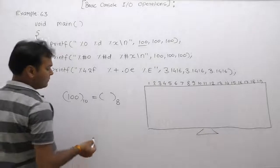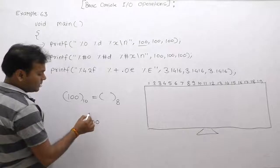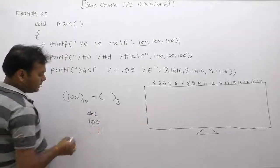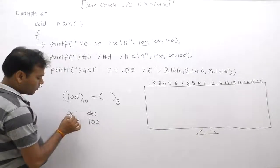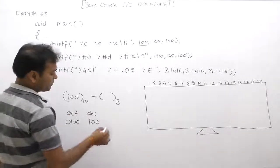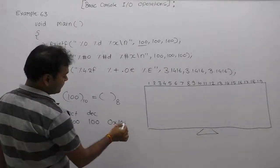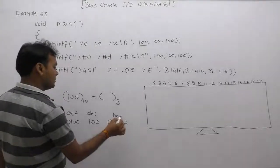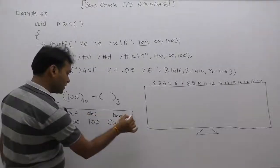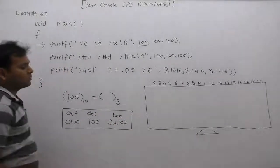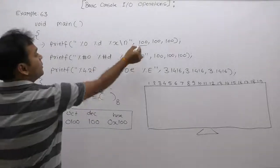By default, a number is considered part of the decimal number system. Whenever any integer number starts with zero, it is in the octal number system. Whenever any integer number starts with 0x, it comes under the hexadecimal number system. These are the different representations of number systems. By default, the decimal number system is used — and we are using this property in the second printf.